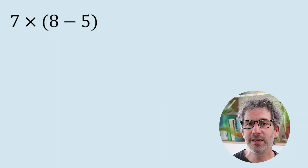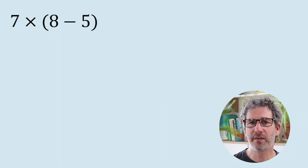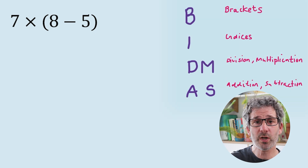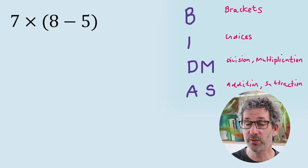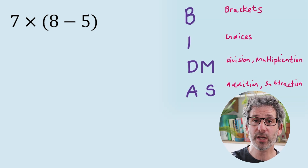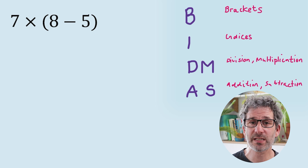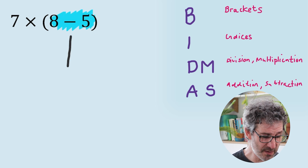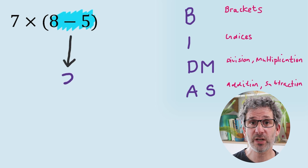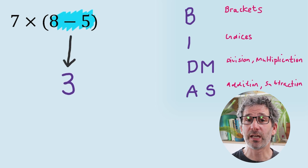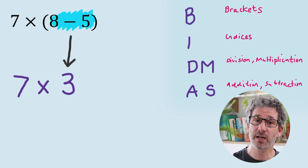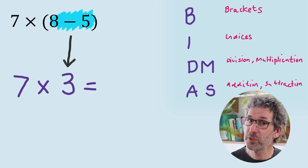Next: 7 times, in brackets, 8 minus 5. Working through BIDMAS in order — do we have any brackets? Yes, we do. So we work out the stuff inside the bracket first: 8 minus 5 is 3. The calculation then becomes 7 times 3, which is 21.